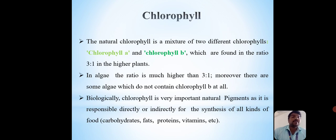The natural chlorophyll is a mixture of two different chlorophylls, chlorophyll A and chlorophyll B, which are found in the ratio 3 to 1 in the higher plants. In algae, the ratio is much higher than 3 to 1. Moreover, there are some algae which do not contain chlorophyll B at all.